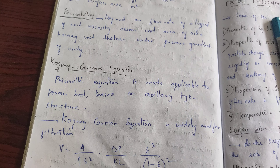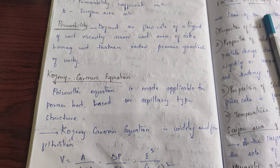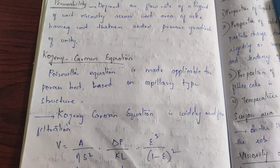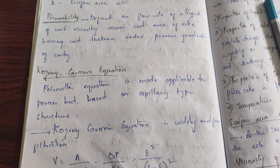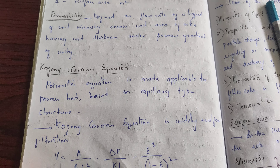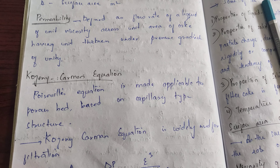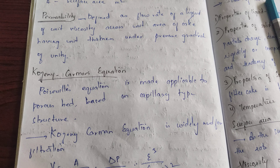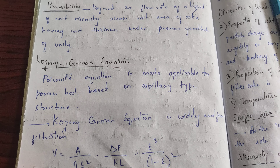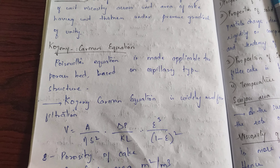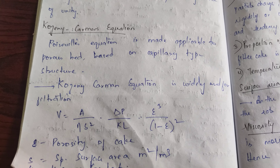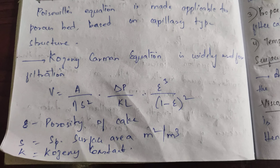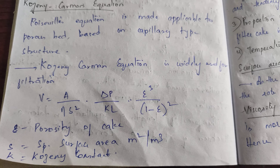The next equation is the Kozeny-Karman equation. He took the Poisson's equation and made some changes. The Poisson equation is made applicable for a porous bed based upon the capillary type structure. The Kozeny-Karman equation is widely used for filtration.